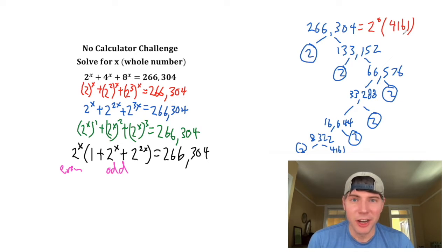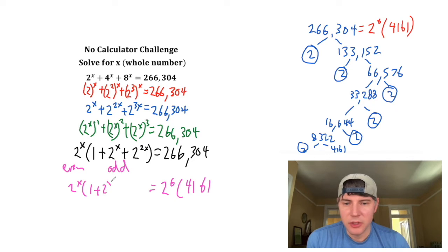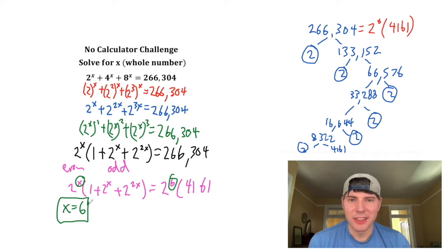So basically, we have an even part and an odd part. So now we can rewrite this 266 as 2 to the 6 times 4,161. And that'll be equal to 2 to the x times 1 plus 2 to the x plus 2 to the 2x. So from here, can we just say that x equals 6? So is that the answer for x?